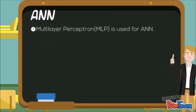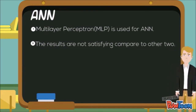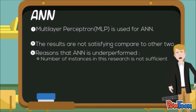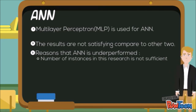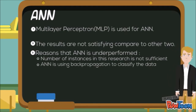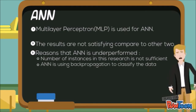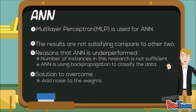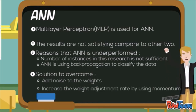In this research, MLP is used for ANN. Based on the results, ANN is underperforming compared to the other two methods. There are a few possible reasons: the number of instances is not sufficient as a test and validation dataset. In addition, ANN uses back propagation to classify the data, where weight values are adjusted on each iteration. The values of the weights might converge into a local minimum but not the global minimum.